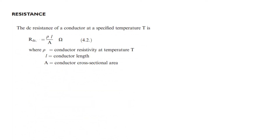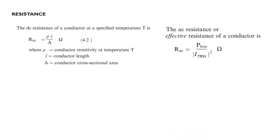Resistance: DC resistance and AC resistance. DC resistance is defined by the formula using rho, the resistivity of the conductor, L for length, and A for area. AC resistance is calculated using P-loss divided by I-squared, or I-RMS squared.